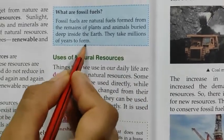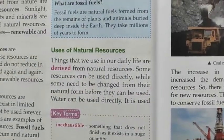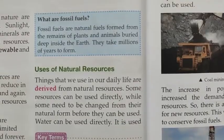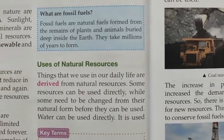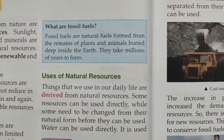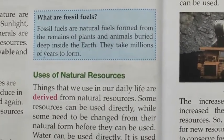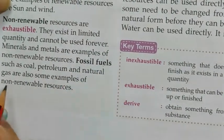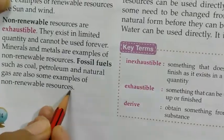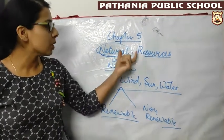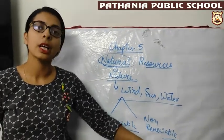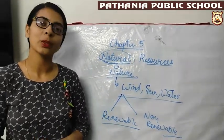Fossil fuels take millions of years to form. Fossil fuels such as coal, petroleum and natural gas are examples of non-renewable resources. So this was your chapter on natural resources — what they are and their two types: renewable and non-renewable. Thank you, bye bye.